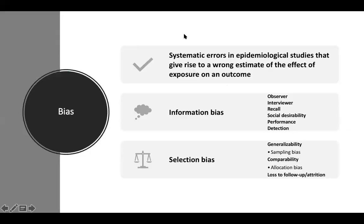Biases are generally used in an interdisciplinary approach — it's a very widely used word or terminology. In every instance of its usage, it always connotes something similar across fields: an extremity of subjectivity. But in epidemiology and biostatistics, we see it as a systematic error that gives rise to a wrong estimate of the effect of exposure on an outcome.